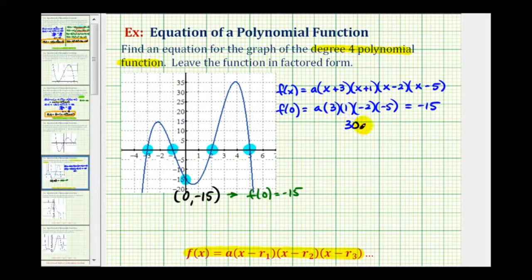So we have thirty a equals negative fifteen. Divide both sides by thirty. We have a equals, this simplifies to negative one-half.